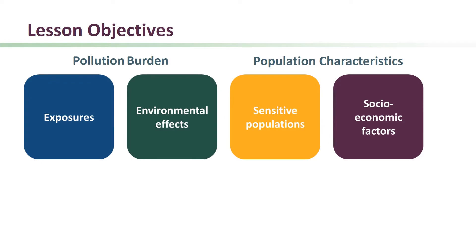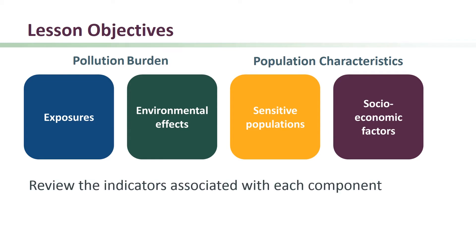Now that we've defined the pollution burden and population characteristics, as well as the exposure, environmental effects, sensitive populations, and socioeconomic factors components, let's review the indicators for each of these components.